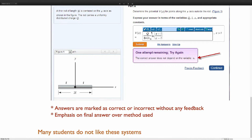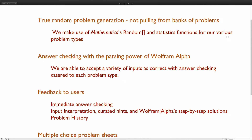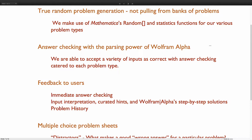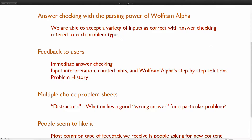Overall, students tend to not like these systems very much. So our problem generator — the things that we've tried to fix: it's true random problem generation. We use various statistics functions that are in Mathematica for all of our problem types. For answer checking, we use the parser from Wolfram Alpha to parse the user's input, and then we have functions on top of that to tailor the user's input towards the particular problem type — so whether it's a vector, we're looking specifically for various ways you could input a vector.